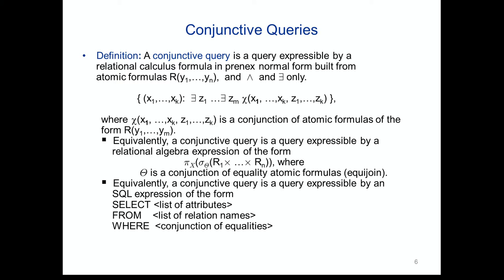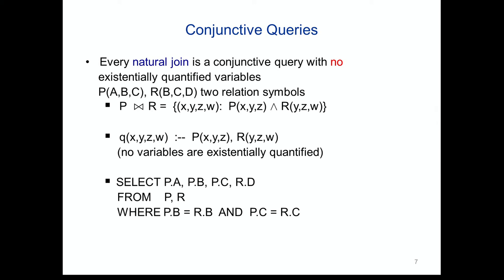The first answer is the language of conjunctive queries. A conjunctive query is a first-order formula consisting of existential quantifiers applied to a conjunction of atomic formulas. Equivalently, it is a projection of a selection of a Cartesian product in relational algebra where the selection is a conjunction of equality atoms. In SQL, the where condition is a conjunction of equalities.